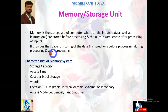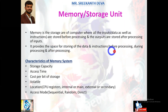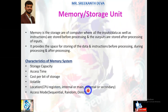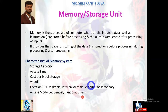Memory provides space for storing data and instructions before processing, during processing, and after processing. Memory system characteristics include: storage capacity, access time, cost per bit, storage volatility, and storage locations like CPU registers, internal or main memories, and external or secondary memories. Access modes include sequential access, random access, and direct access. Detailed explanations are provided in previous sessions — links are in the description box.